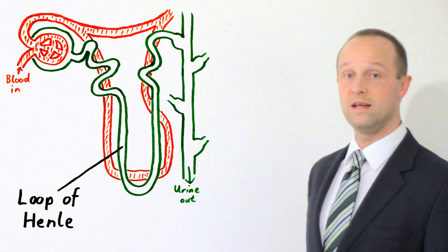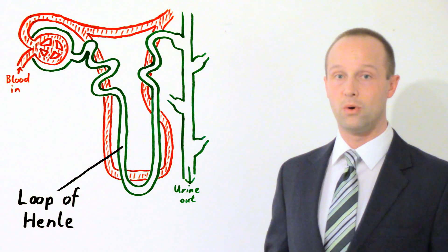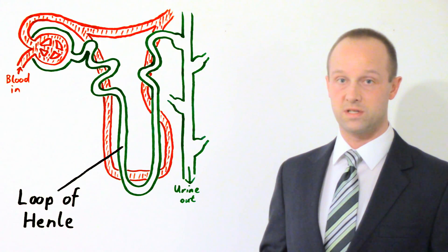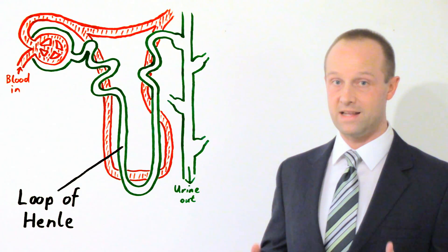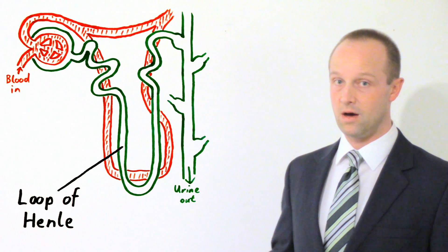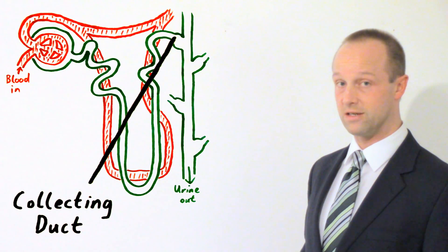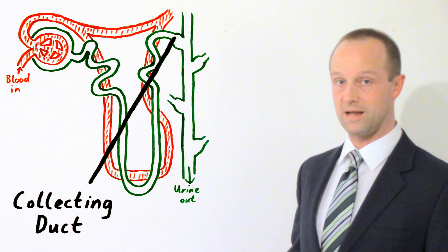What happens is the loop of Henle becomes more porous. It allows more water to pass back out of it and into the kidney to be reabsorbed back into the body, rather than making its way to the collecting duct here and finding its way to the bladder. So increasing ADH levels mean the kidney absorbs more water back into the body. It means that the urine which is produced is going to be much less watery.